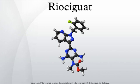Riociguat is a novel drug that is a stimulator of soluble guanylate cyclase. Clinical trials have looked at riociguat as a new approach to treat two forms of pulmonary hypertension: chronic thromboembolic pulmonary hypertension and pulmonary arterial hypertension. Riociguat constitutes the first drug of a novel class of SGC stimulators.